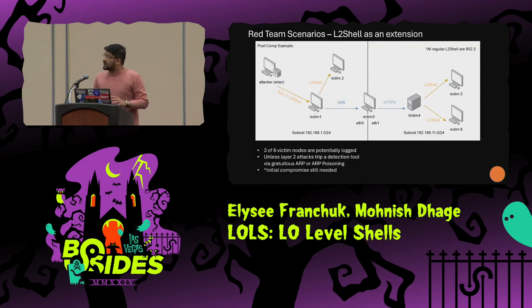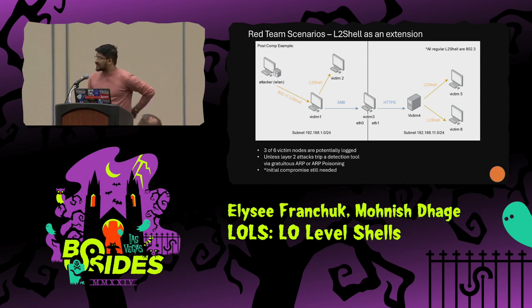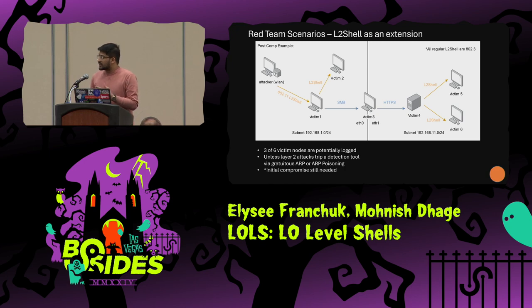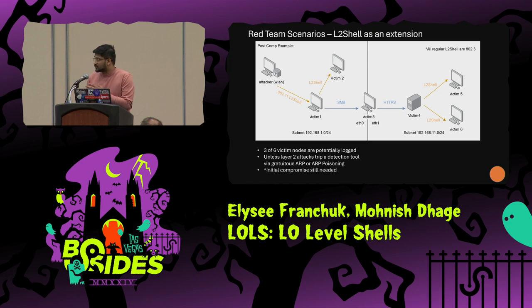The use case we can think of is a red teaming scenario or a C2 extension, basically where we are using this for communication between compromised hosts. Out of the six hosts shown, three of them are not using the L2 shell, so they are at risk of getting compromised. However, the ones that are using L2 shell would be very hard to detect.